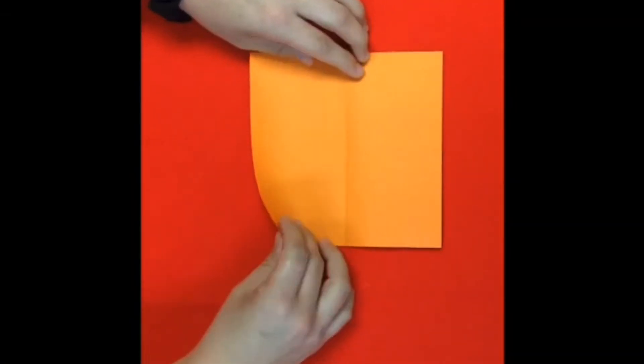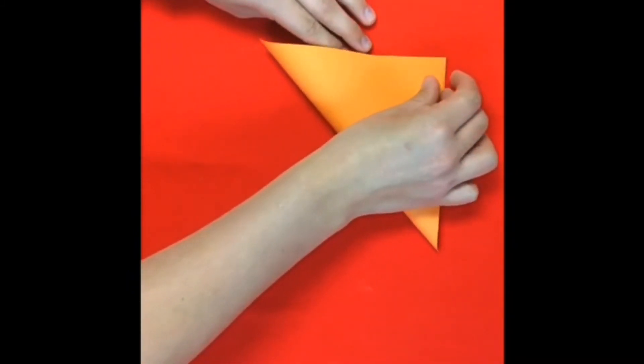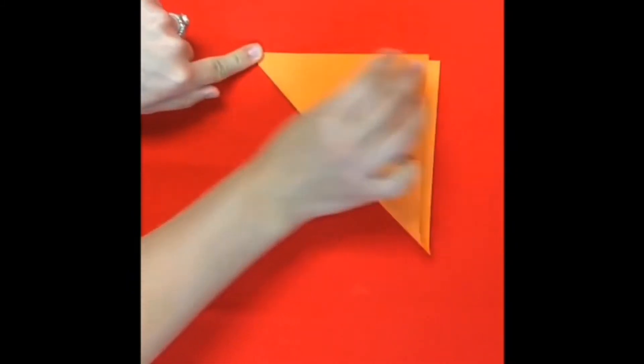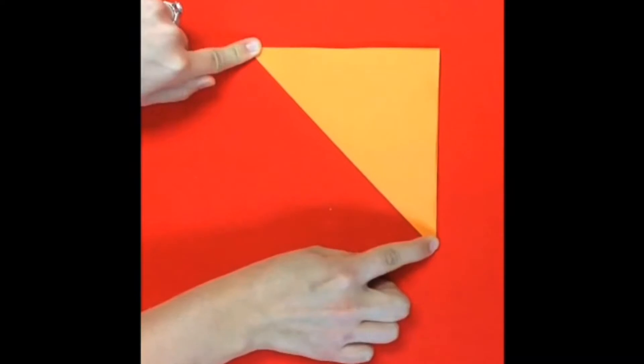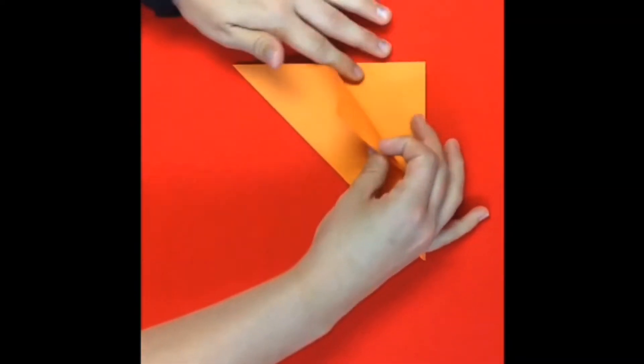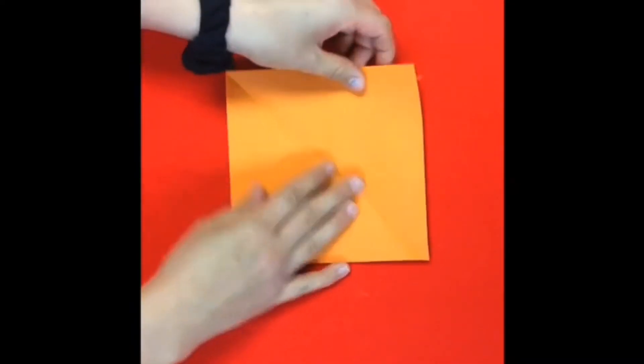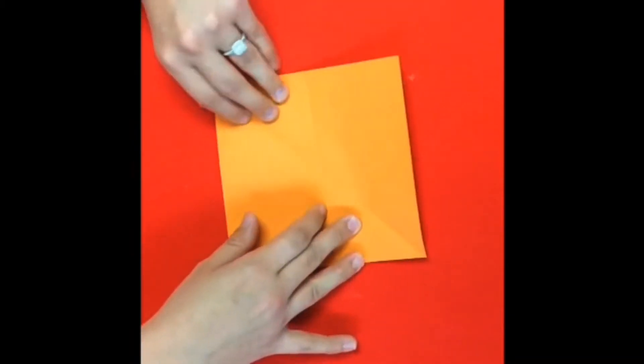Step one is to start by folding your paper into a triangle diagonally and then you will unfold it and then you will go this way as well.